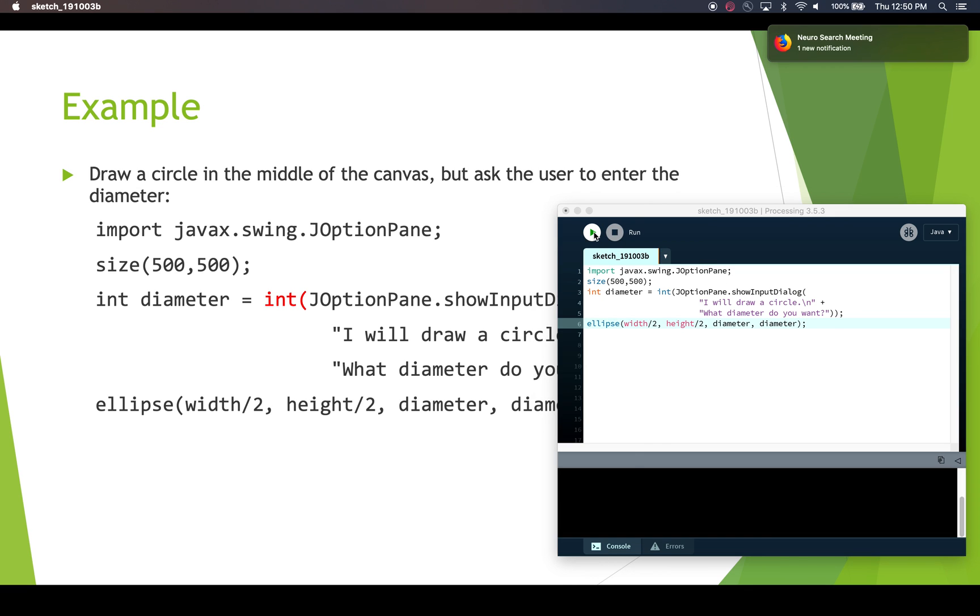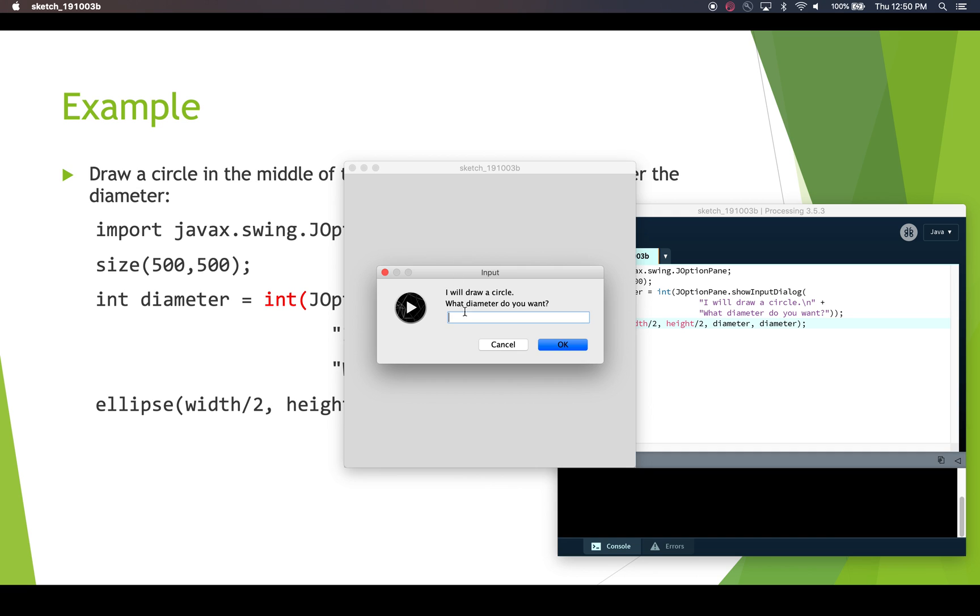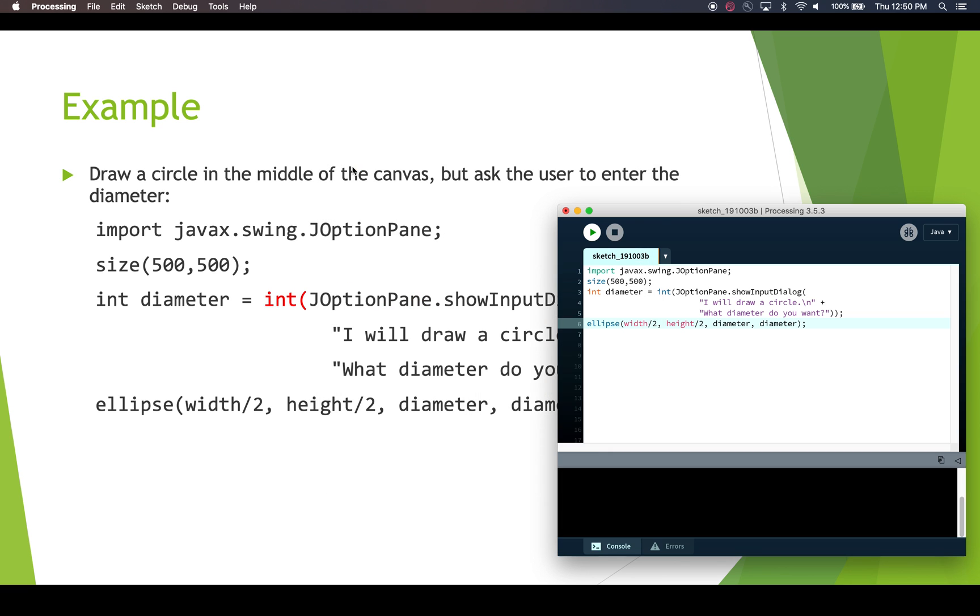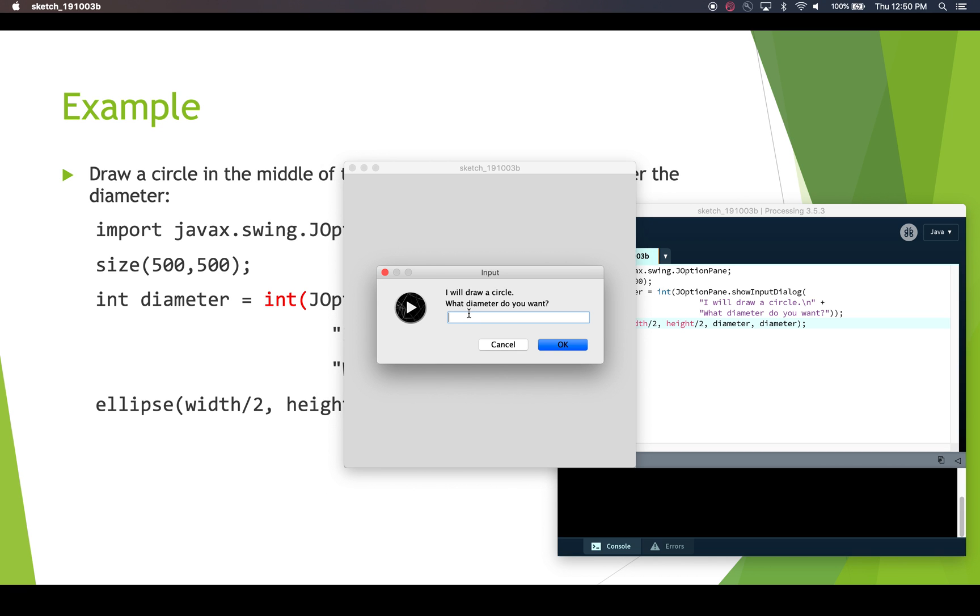So if we run this, here's our input box. What diameter do you want? If I say 20 then I get this tiny little circle. If I run this again and I say 200 then I'm going to get a much bigger circle. Now if I run this and I don't give it a number, if I give it my name I don't get a circle and that's because it will try and convert it into an integer it won't be able to do it and the integer will be zero and so we're getting a zero diameter circle here.